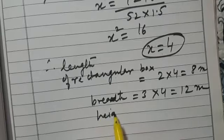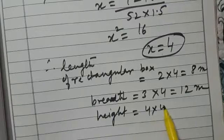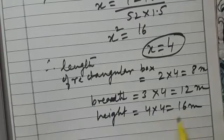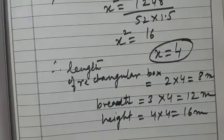Height is equal to 4 × 4 = 16 meters. I hope it is clear to you.